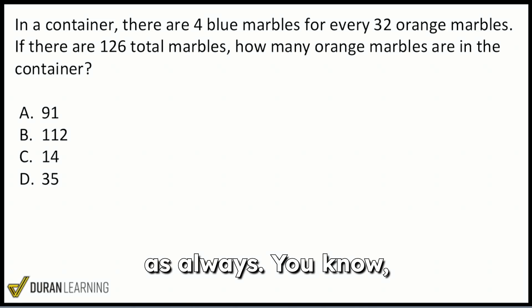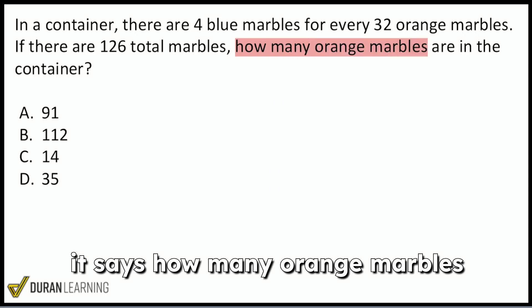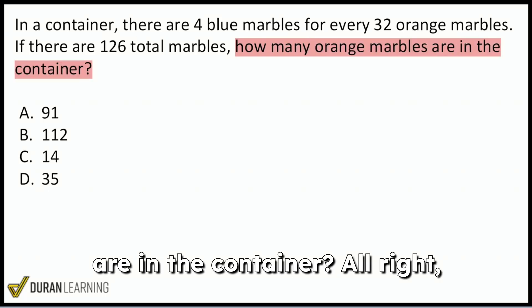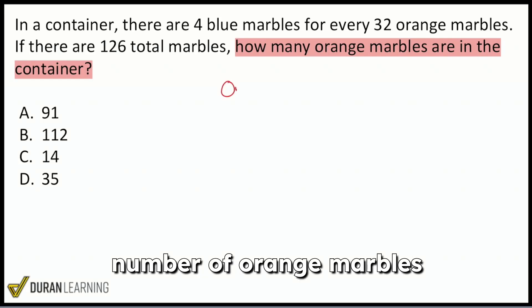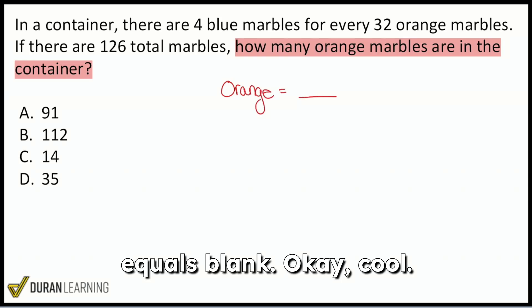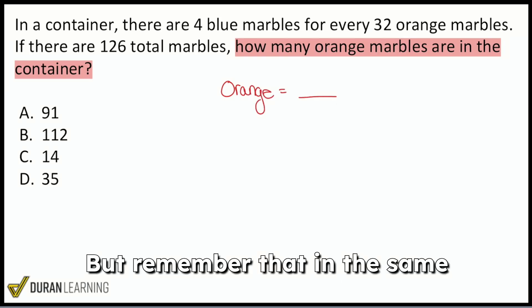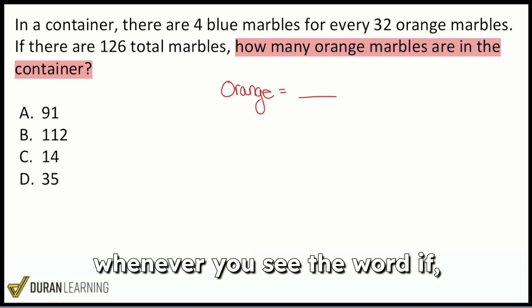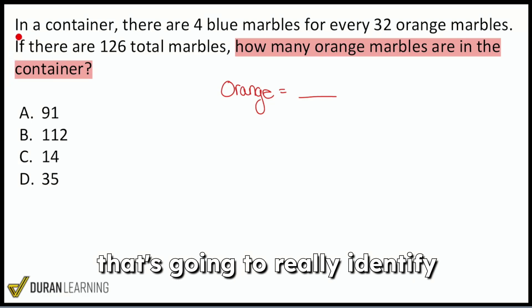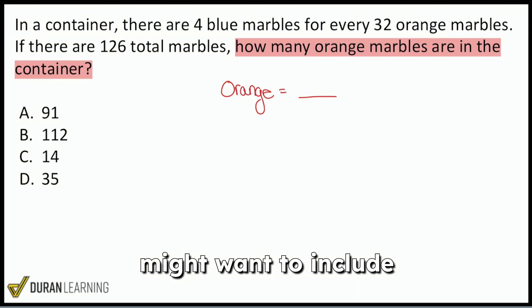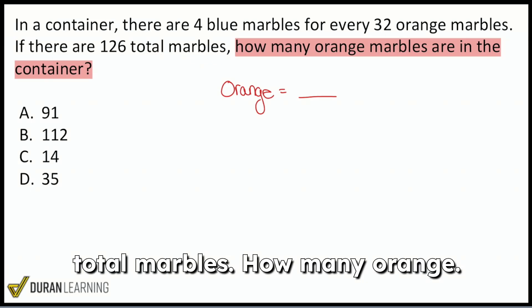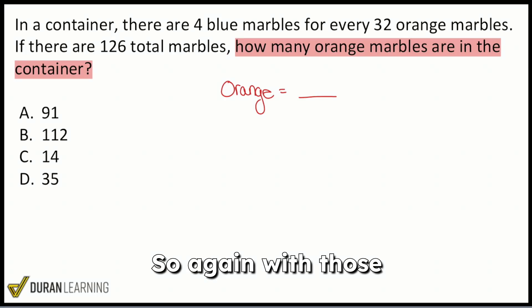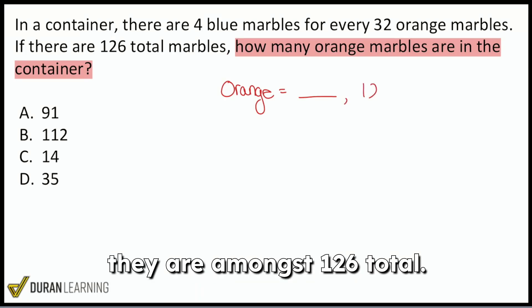So first things first, as always, we're going to read the question. It says, how many orange marbles are in the container? So what we want to know is the number of orange marbles equals blank. But remember that in the same sentence as the question sentence, whenever you see the word if, that's going to really identify any extra information that you might want to include with that answer. And so right here, we have 126 total marbles. How many orange? So with those orange marbles, they are amongst 126 total.